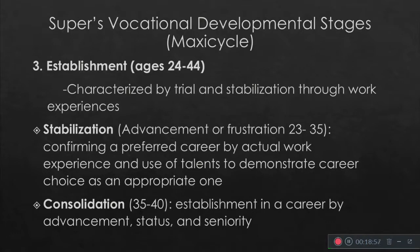The third stage is establishment, at ages 24 to 44. These are characterized by trial and stabilization through work experiences — more on trial and error. They focus on whether a career is good for them or maybe they should change. For example, let's say someone entered as a social worker and after two years decided to become a guidance counselor, taking up a master's in guidance and counseling to work under an educational institution.